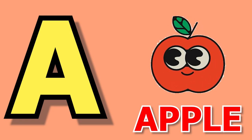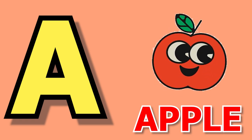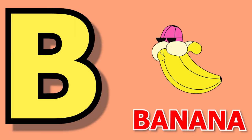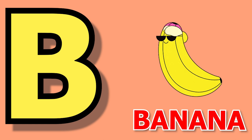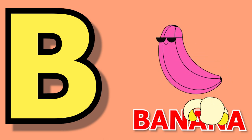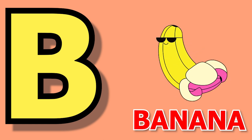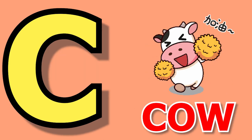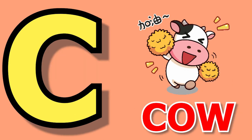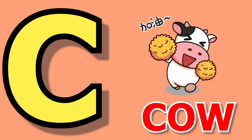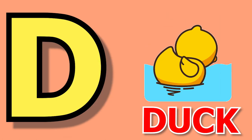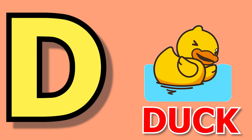A for apple, apple means egg. B for banana, banana means kela. C for cow, cow means gay. D for duck,